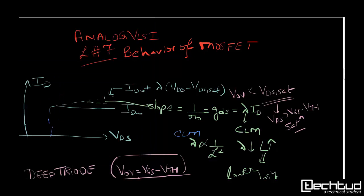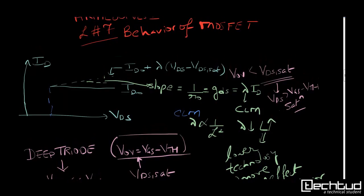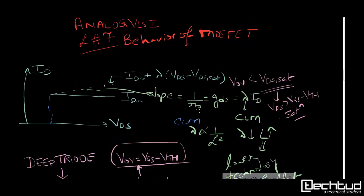Hello everyone, myself Ankit Shivare. I will be coordinating course on analog VLSI, so we are on lecture 7, behavior of MOSFET. In this module we are going to discuss the behavior of MOSFETs in different region of operations. We have discussed in lecture 6 in saturation, linear, and cutoff how the transistor behaves.